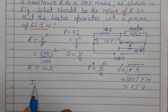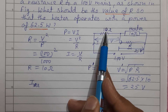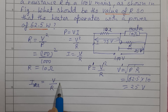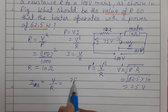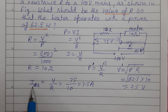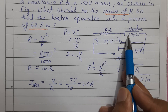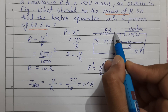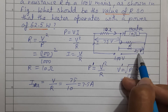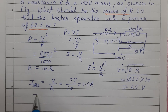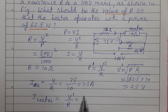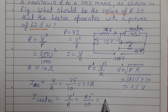Since the heater (10Ω) and the series 10Ω resistor are in parallel, both have 25V across them. The current through the 10Ω series resistor: its voltage drop is 100 - 25 = 75V, giving current 75/10 = 7.5 amp. The current through the heater is 25/10 = 2.5 amp.